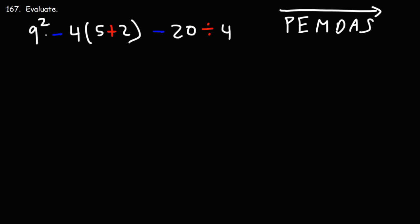So let's begin. Here we have 9 squared. 9 times 9 is 81. And then here we have 4 times 5 plus 2. So we don't want to do 4 times 5. Instead, we want to add what's within the parentheses. So P comes before M. 5 plus 2 is 7.